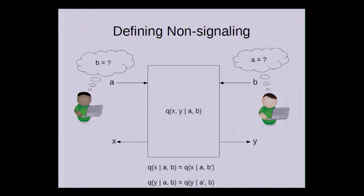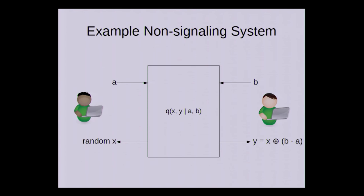So let's see an example of a non-signaling box. We have some input a, and the output on the left is a uniformly random x. So clearly, that's also independent of b. And the output on the right is b times a, XORed with x. So something, XORed with something uniformly random, so clearly, that's independent of a.